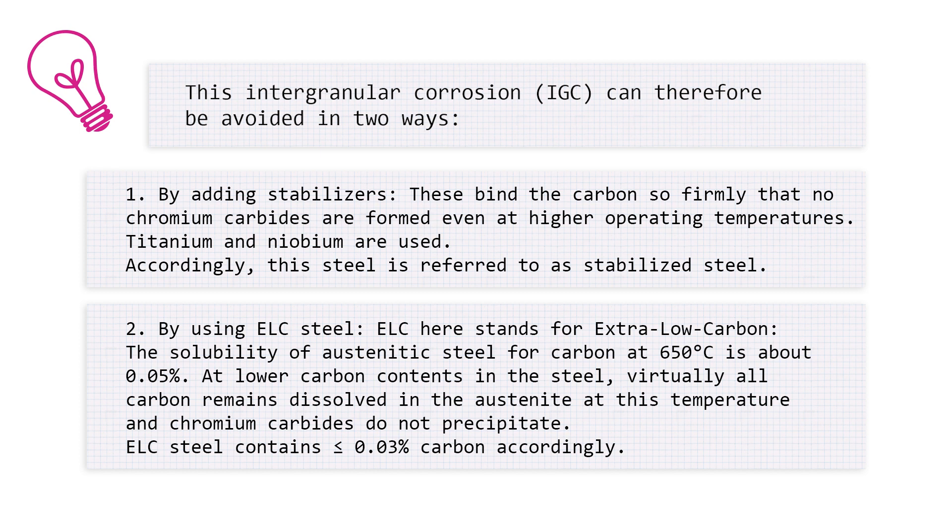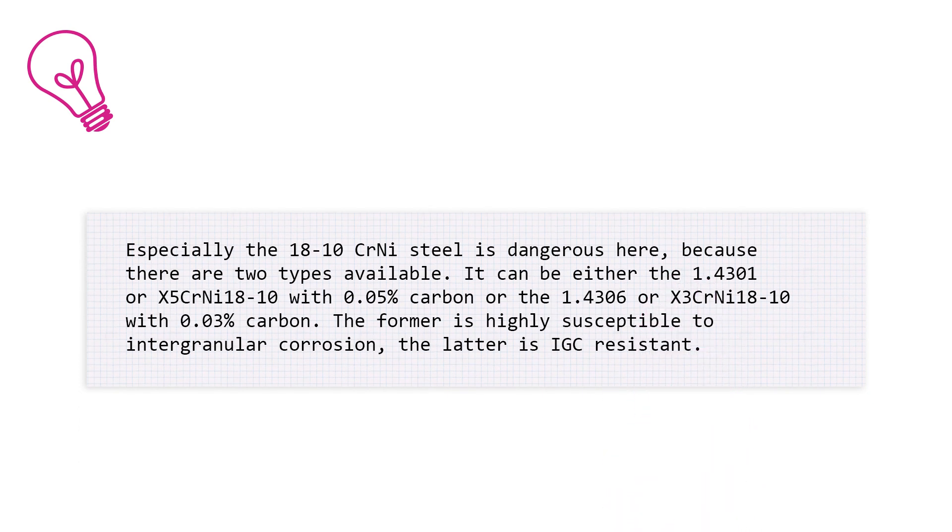ELC steel contains 0.03 percent carbon or less accordingly. Especially, the 1810 CrNi steel is dangerous here because there are two types available. It can be either the 1.4301 or X5CrNi 1810 with 0.05 percent carbon or the 1.4306 or X3CrNi 1810 with 0.03 percent carbon.